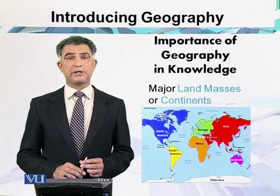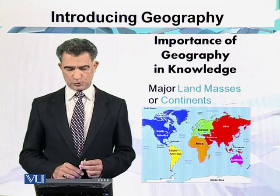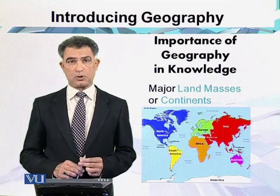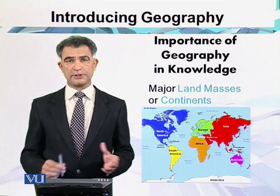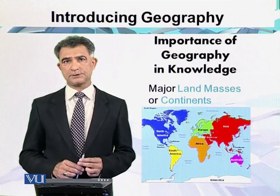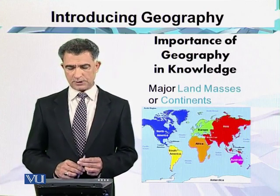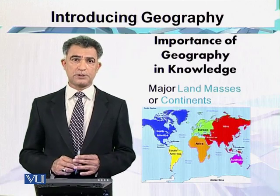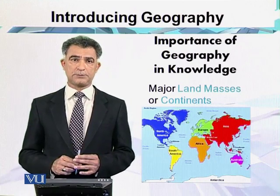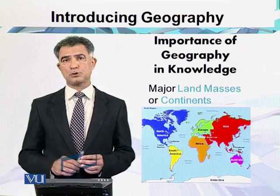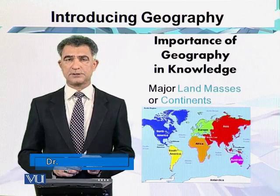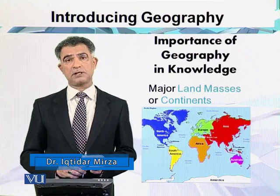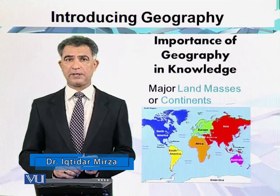We have a map of the world which shows the major land masses, or continents. Today we call them the continents: Asia is the largest one, closer to Asia is Europe, then North America. These are the northern continents of the world. The southern continents are South America, Africa, and Australia.